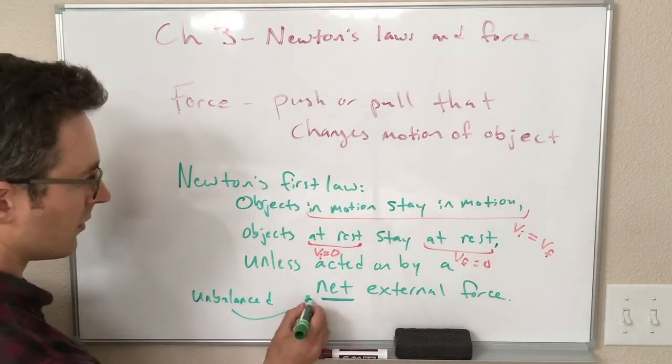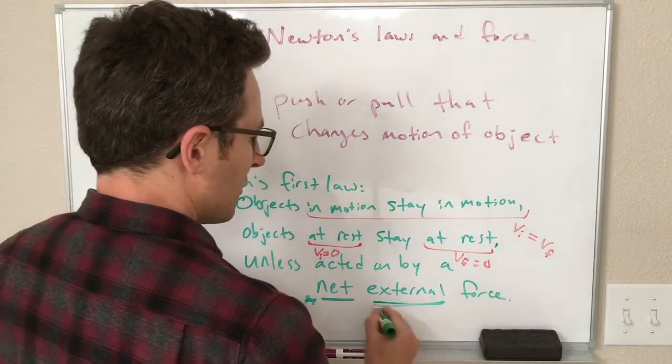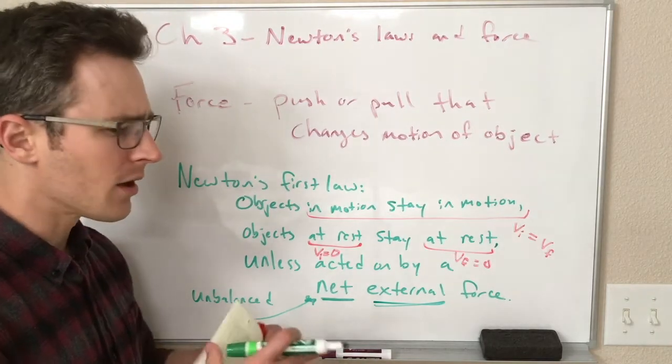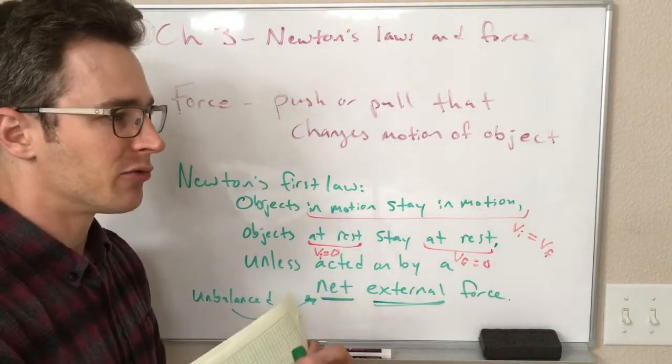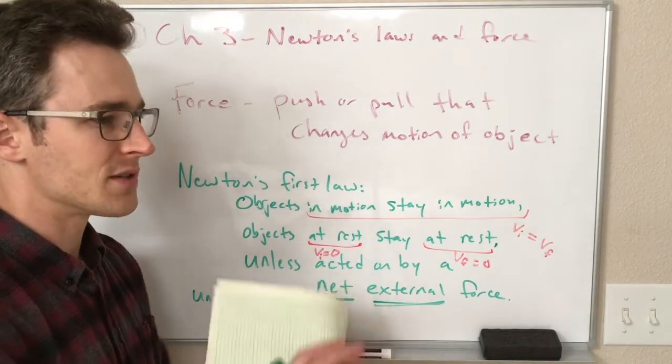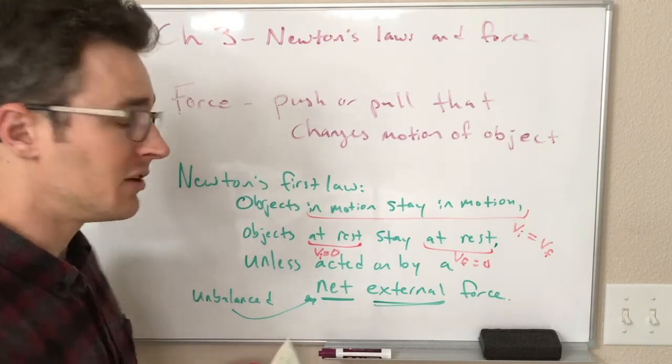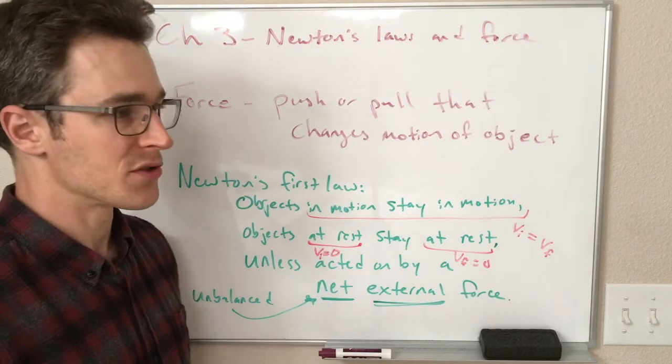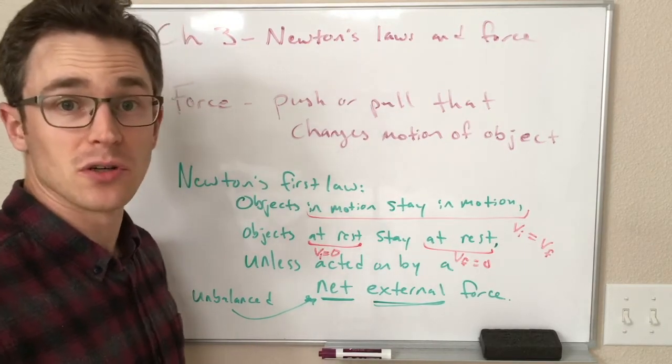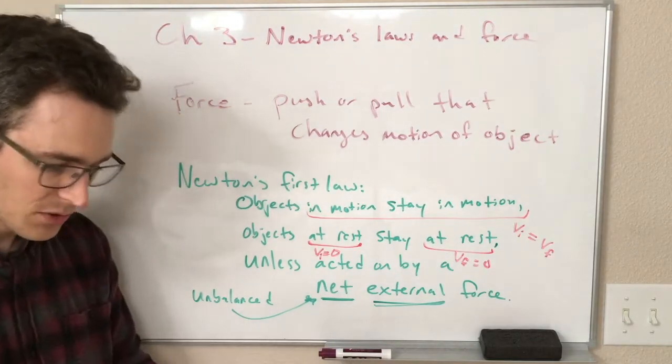This is sometimes also written with unbalanced instead of net, but it's meaning the same thing. External here is also important because we can have maybe a collection of objects that have forces between them, but the whole overall thing does not have a force from the outside acting on it. So you can have internal forces and external forces. And forces internal to an object cannot change its motion. It needs to be a force from something outside the object. So that's what external means here.